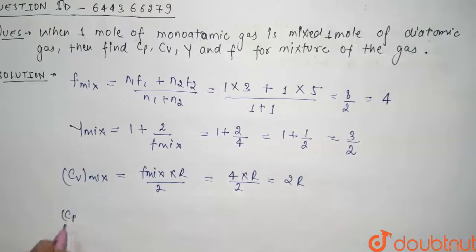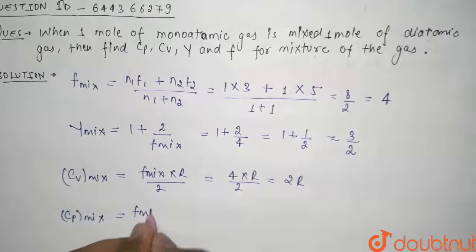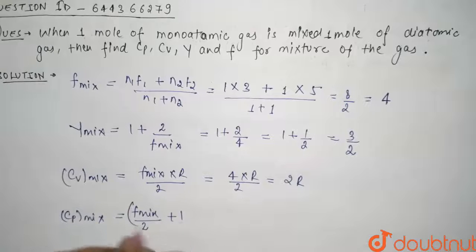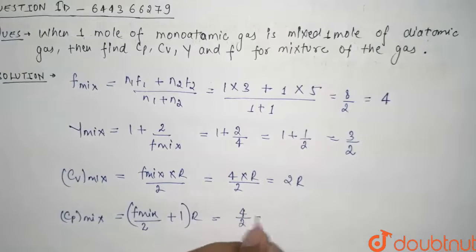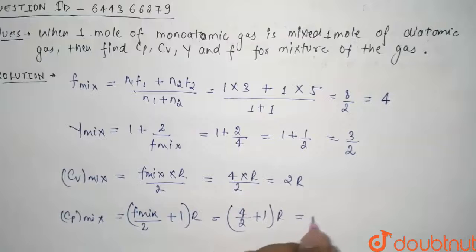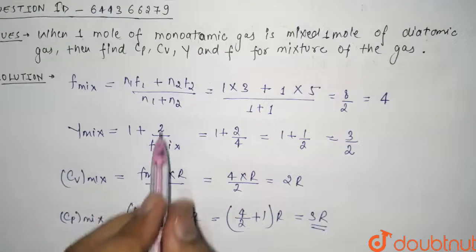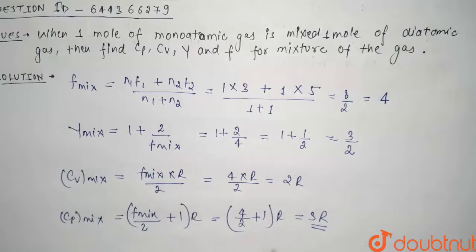Now we have to find Cp mixture. So Cp mixture is F mixture divided by 2 plus 1 into R, so it will be 4 by 2 plus 1 into R, which will be 3R. So these are our Cp, Cv, gamma, and F for the mixture. These are our final answers.